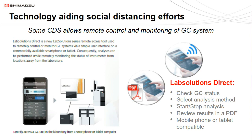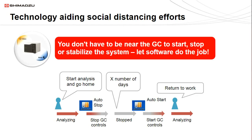You can use Lab Solutions Direct on your phone or tablet to remotely monitor and even control your GC via a browser interface. This feature has a lot of use cases, including choosing methods, starting and stopping runs, reviewing results, and troubleshooting. You can set up the GC to stop automatically and restart at a predetermined time, then begin your analysis and leave the lab. This will help conserve energy while you're not in the lab and allow you to do more work remotely. We can also perform a baseline stability check and a system suitability test to make sure that the GC is ready for analysis as soon as you get back, and monitor all of these processes using Lab Solutions Direct.